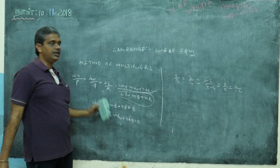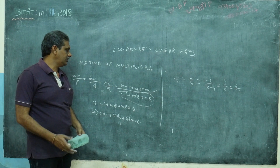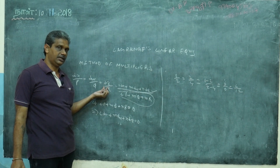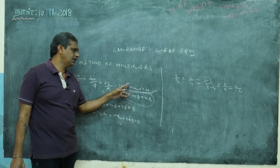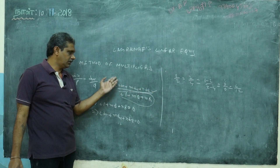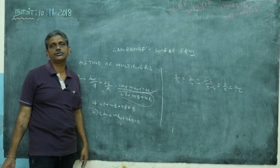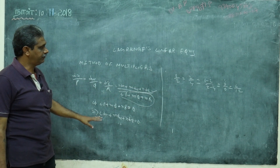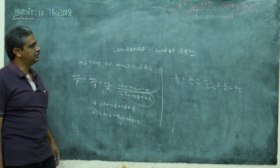Once lP + mQ + nR = 0 implies l dx + m dy + n dz = 0, integrating gives lx + my + nz = c₁ as one solution. This is the method of multipliers. So the two methods are: method of grouping and method of multipliers. We'll do three to four problems to understand Lagrange's equation.